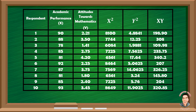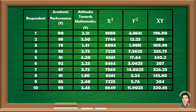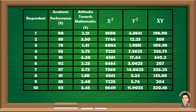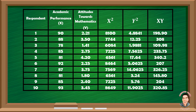For the summations, add each column. The summation of x (academic performance) equals 860. The summation of y (attitudes towards mathematics) equals 27.72. The summation of x squared equals 74,182. The summation of y squared equals 84.35. And the summation of xy equals 2,394.73.